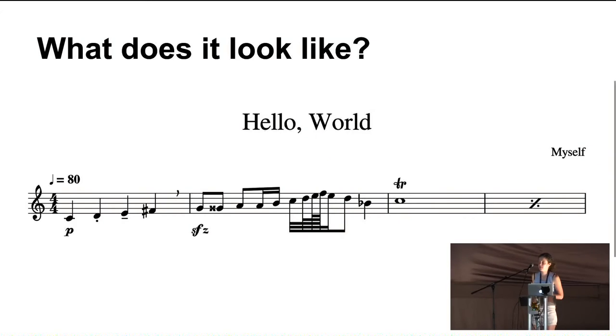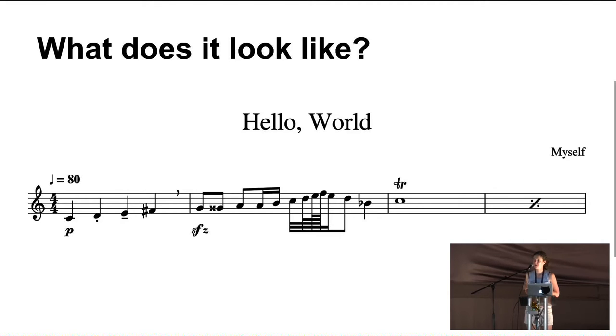The problem is that we have sheet music — a symbolic language which combines human languages with symbols. All you really need to know about it is that it's pretty complicated. Up and down on the five lines tells us what pitch or frequency we're trying to produce with each sound, and horizontally we have time. Each unit of music is called a bar, delineated by vertical lines.